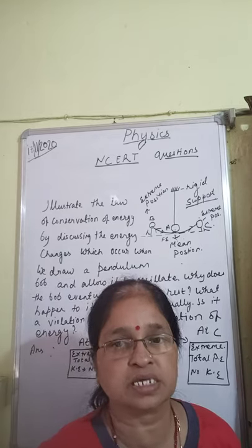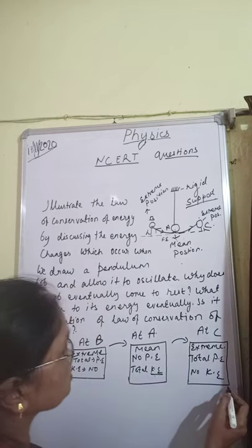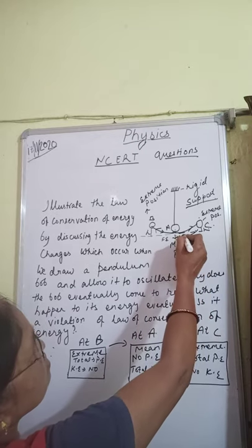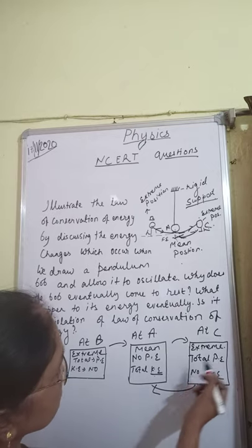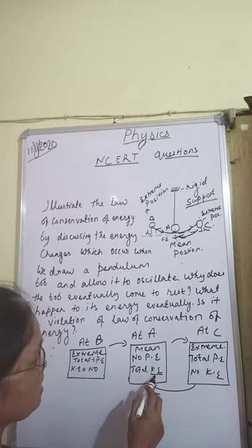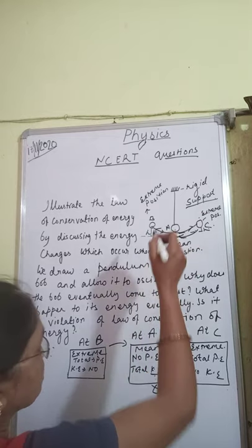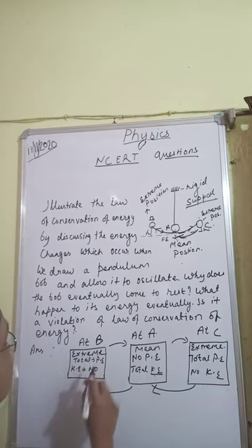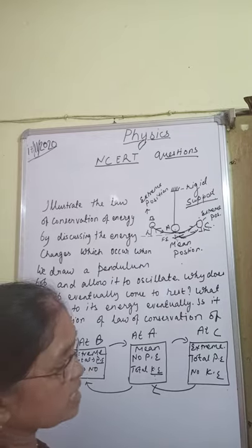This is a transformation of energy, but the total energy remains constant. From C back to A, all the potential energy again changes into kinetic energy, giving total kinetic energy at the mean position. Then going to the next extreme position, total kinetic energy changes back into potential energy.